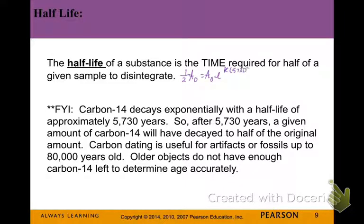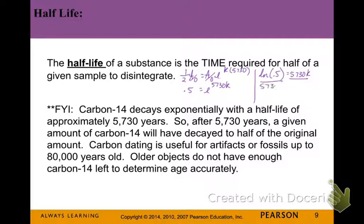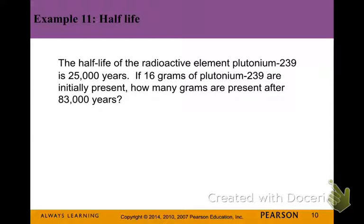Writing this as an equation: half the beginning amount equals A₀ times e raised to some k value times the number of years. The A₀ values divide out, leaving 0.5 = e^(5730k). Rewriting as a natural log and dividing by 5730, our k value is negative 0.000121. Now we have that value to use in our carbon-14 half-life formula.